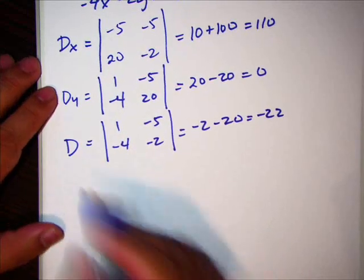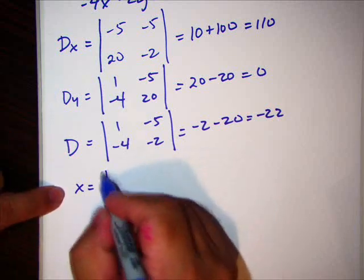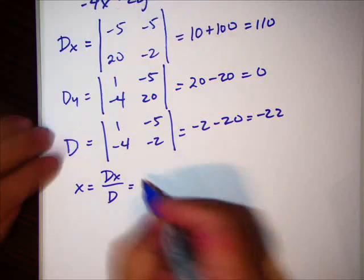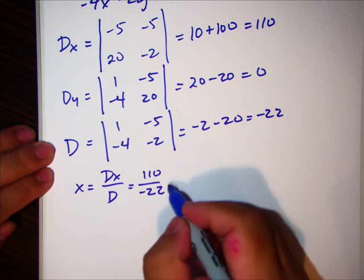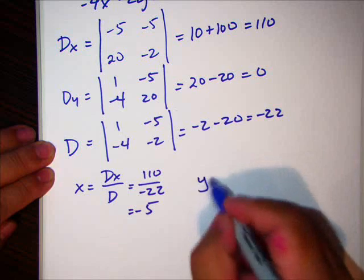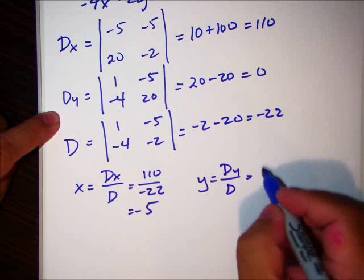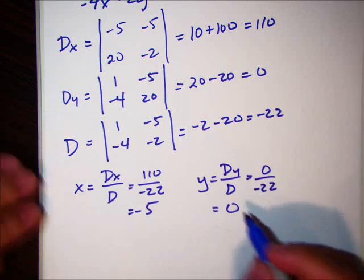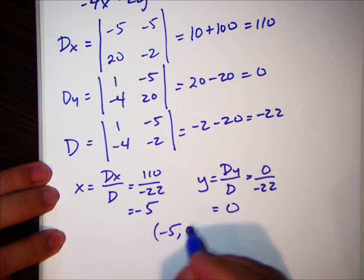Okay. To get my answers, x, the value of x, is going to be dx over d. dx is 110. d is a negative 22. Reduce that, and I get negative 5. y is dy over d. So, that's 0 over negative 22, making it 0. So, final answer is negative 5, 0.